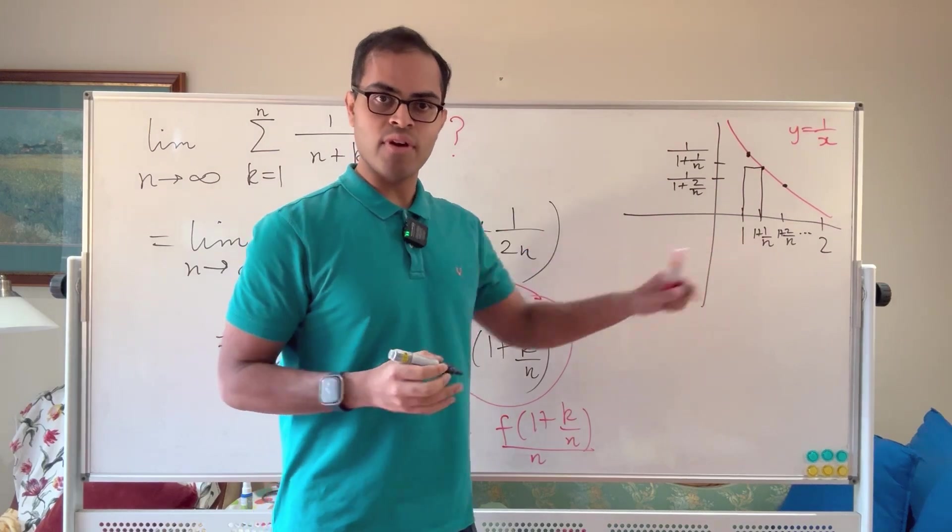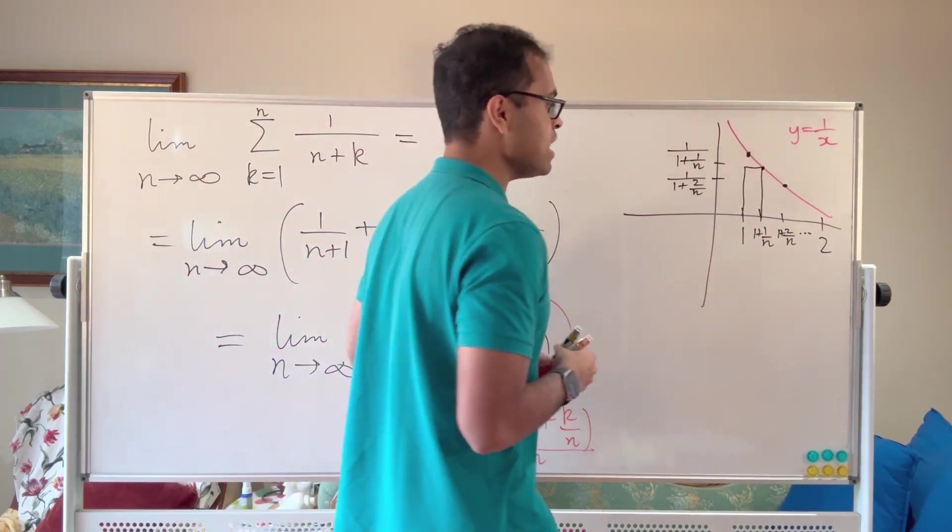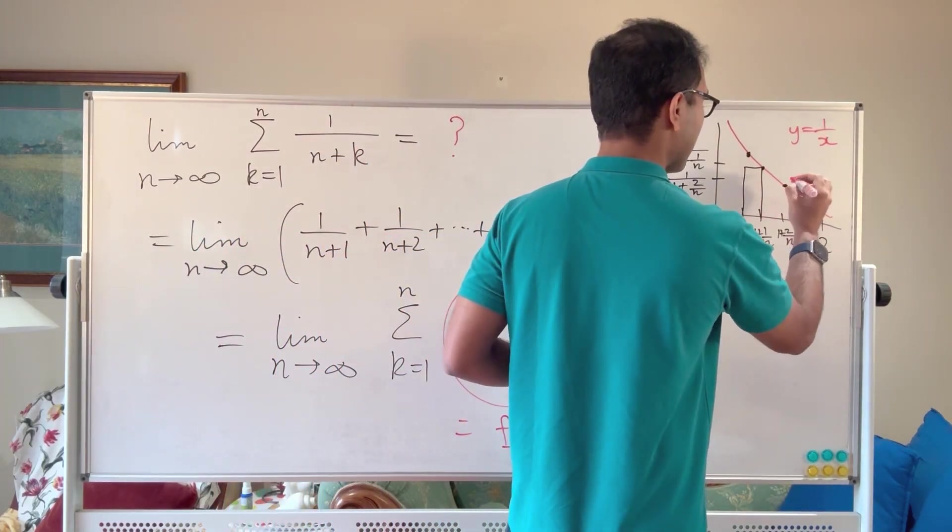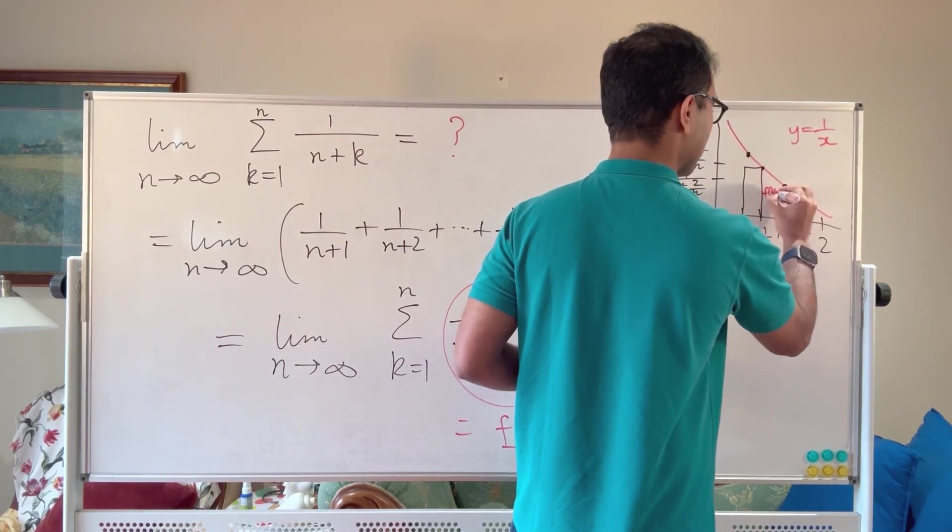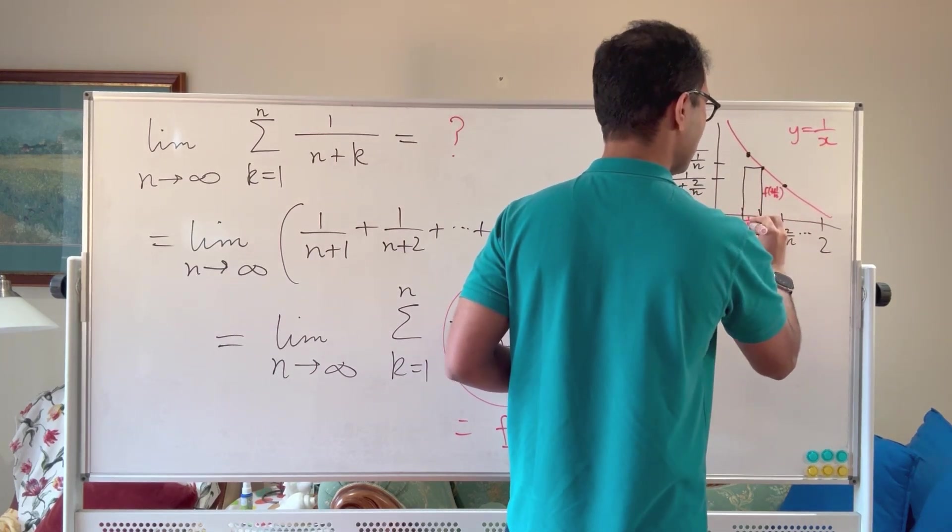Its base is going to be 1 over n and its height is going to be f of 1 plus 1 over n, right? So its height is going to be f of 1 plus 1 over n and its base is going to be 1 over n.